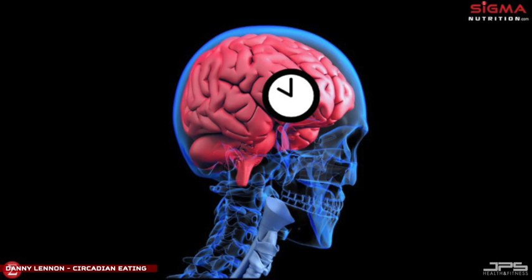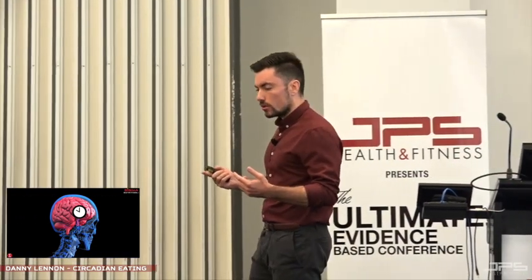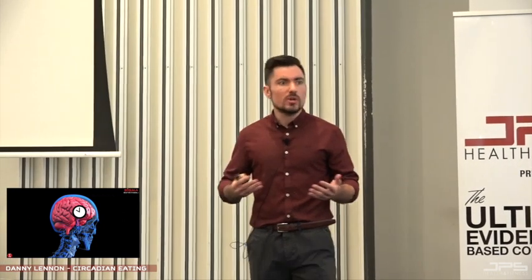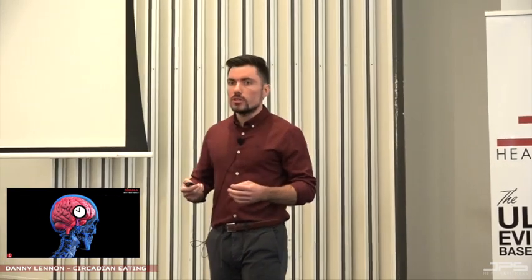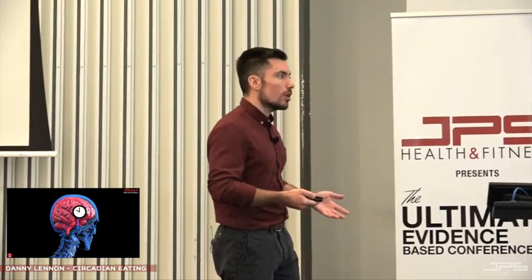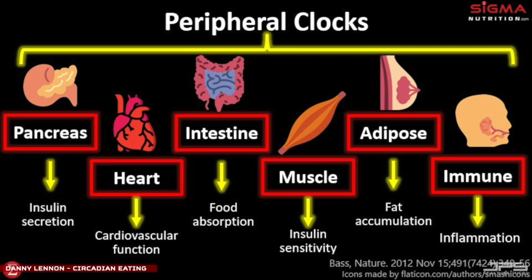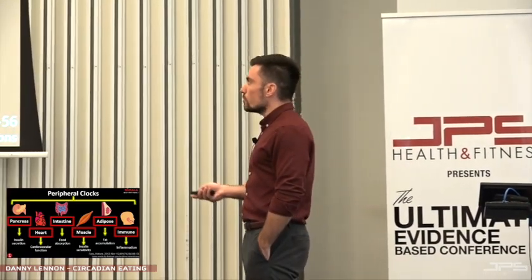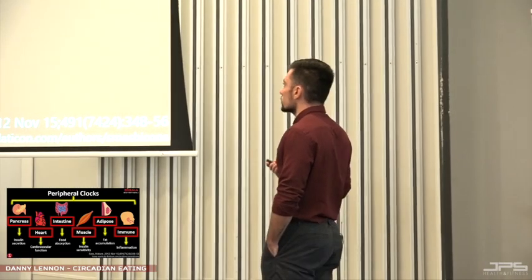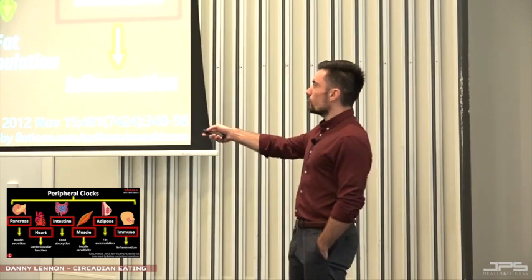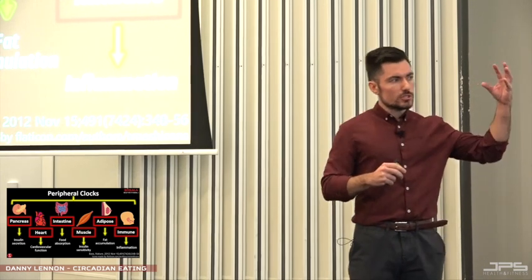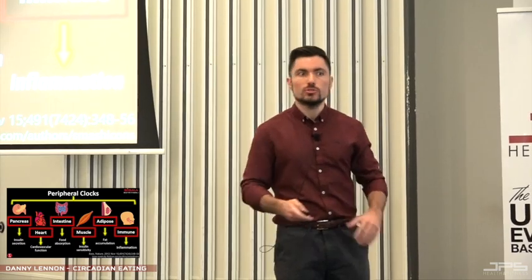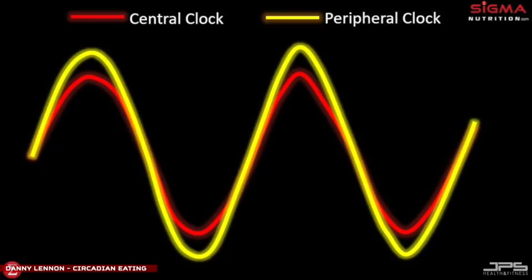What this has to do with nutrition is that not only do we have this main circadian clock — which most people are aware of if they've ever had jet lag — we also have circadian clocks in all tissues around the body, called peripheral clocks. Relevant ones for nutrition include peripheral clocks located in the pancreas, heart, intestine, muscle, fat tissue, and immune cells. Therefore we have a potential circadian basis for things like insulin secretion and food absorption.